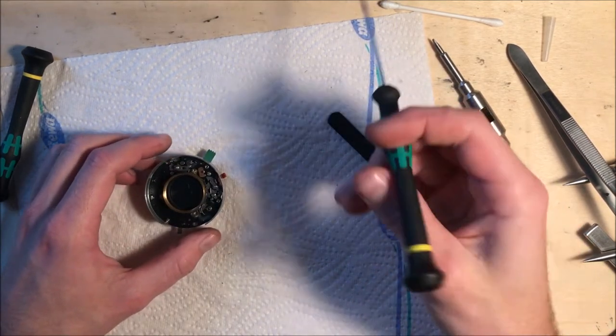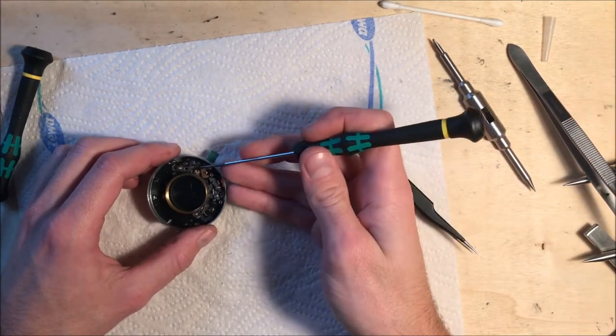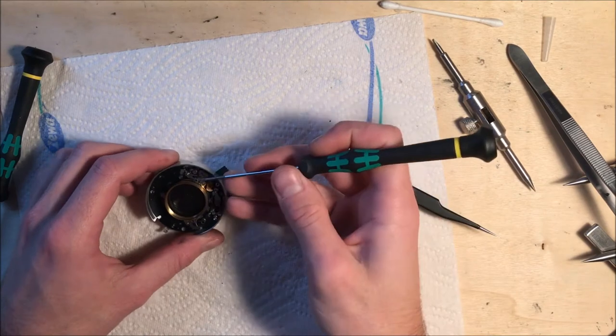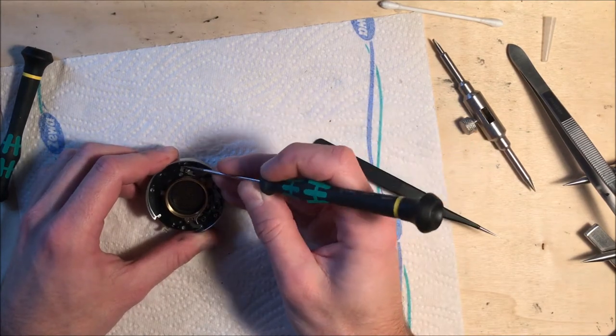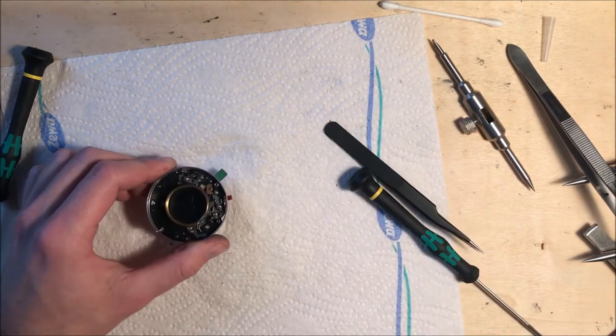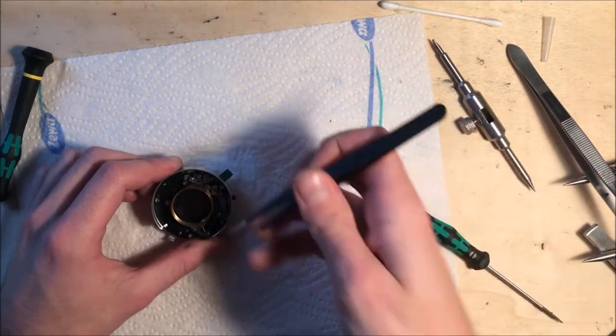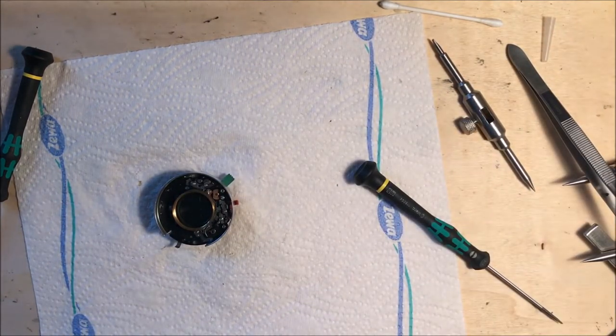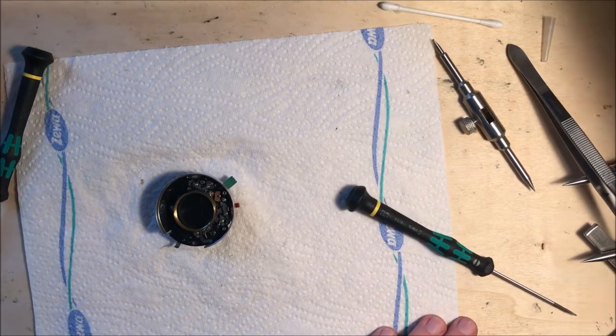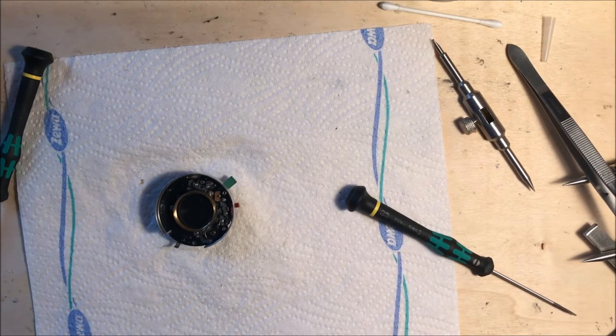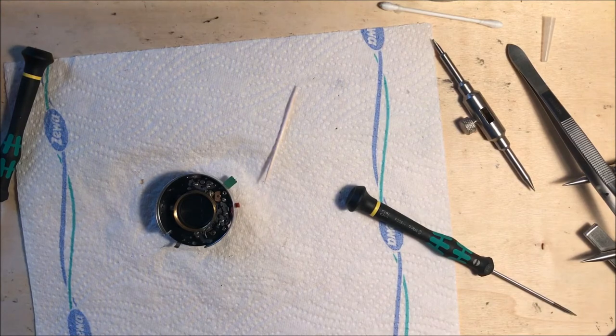I'll finish this side first. There's still some things that can be removed for easier cleaning. First of all, these two levers are for the self-timer and they have springs on them. I want to remove the springs first.